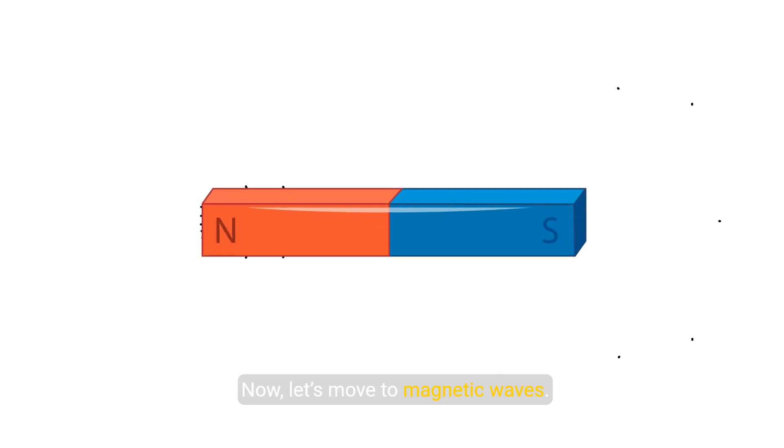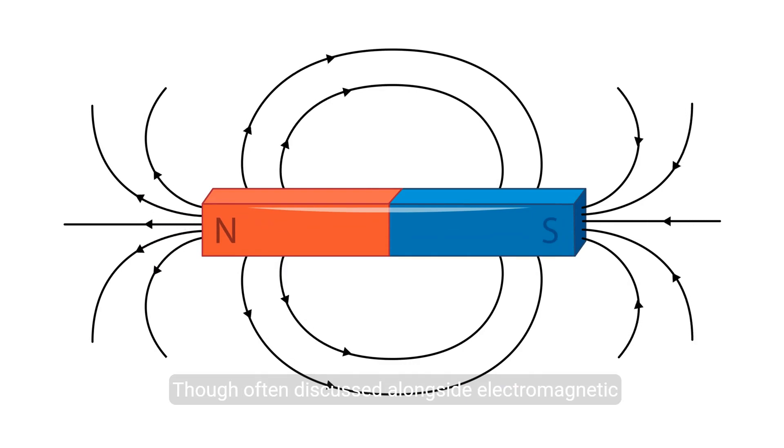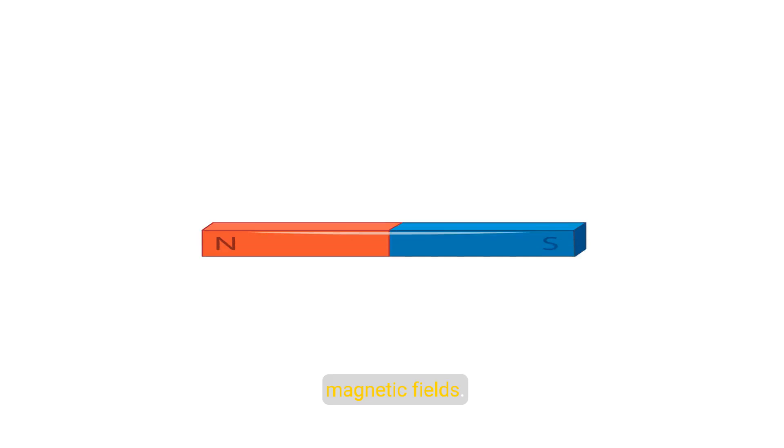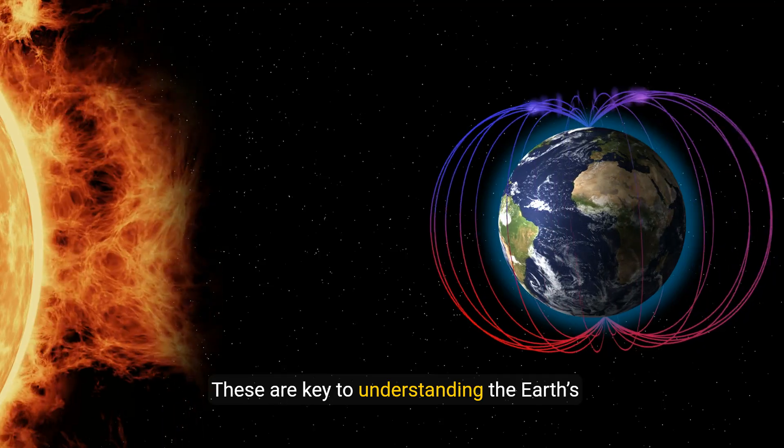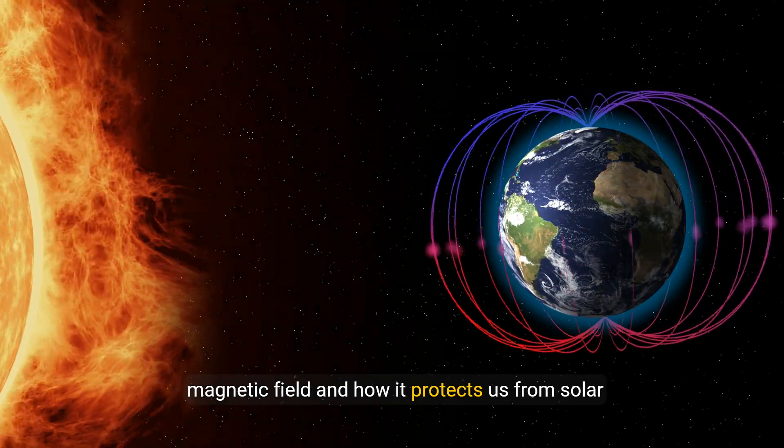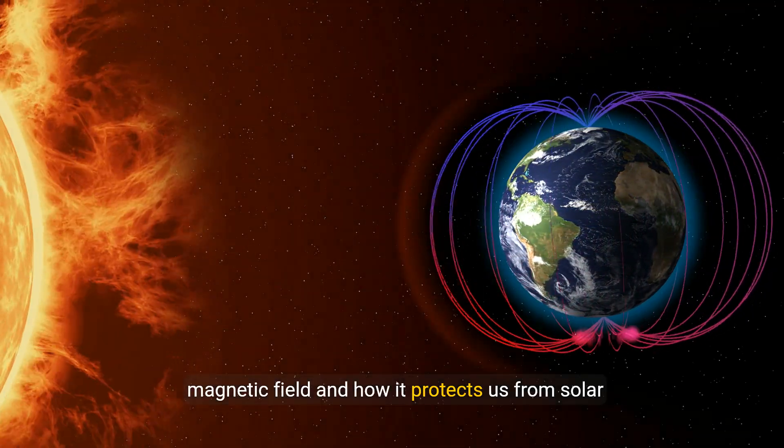Now let's move to magnetic waves. Though often discussed alongside electromagnetic waves, magnetic waves focus on variations in magnetic fields. These are key to understanding the Earth's magnetic field and how it protects us from solar radiation.